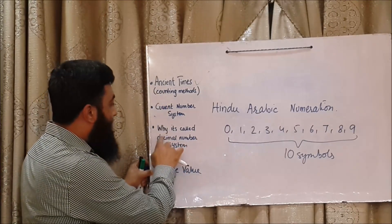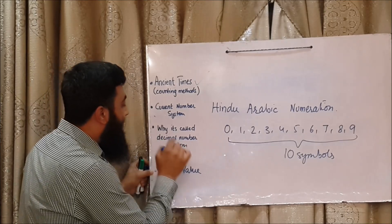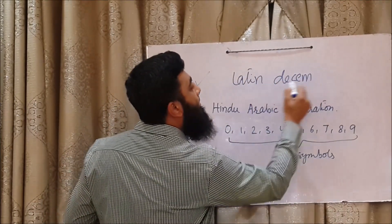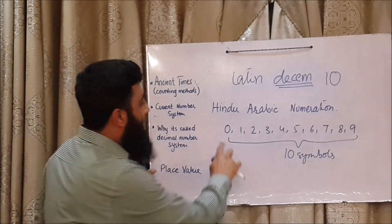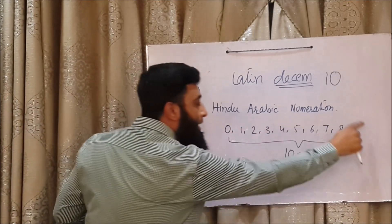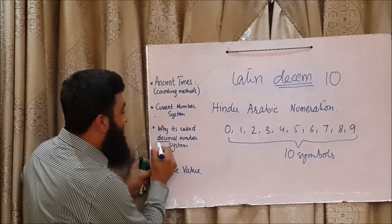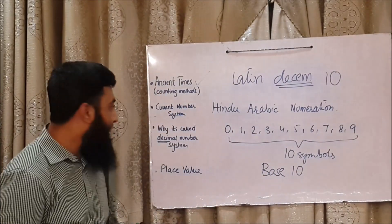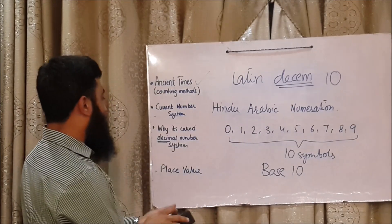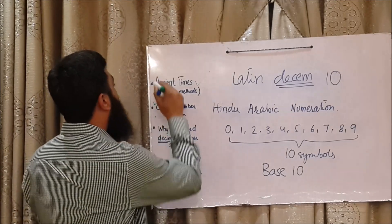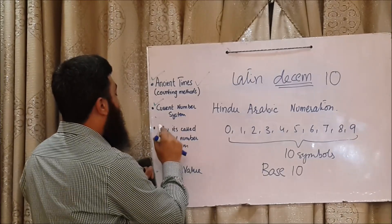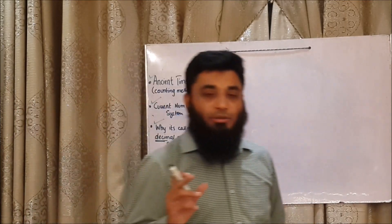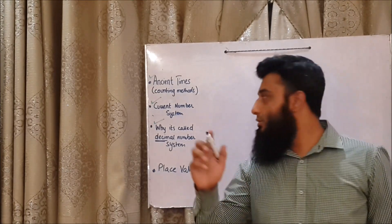This will answer the question of why it's called the decimal number system. In Latin, 'decim' stands for ten. And as I have told you, there are ten symbols. So this number system is the decimal number system, or a number system with a base of ten. We have covered the current number system and why it's called a decimal number system. Now the very important concept of place value — with the place value, any number you can imagine can be written with this decimal number system.